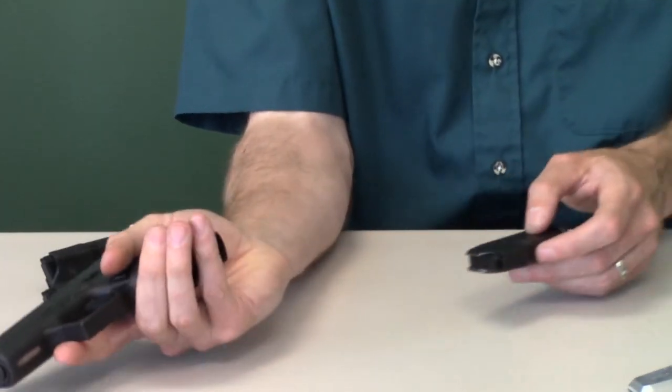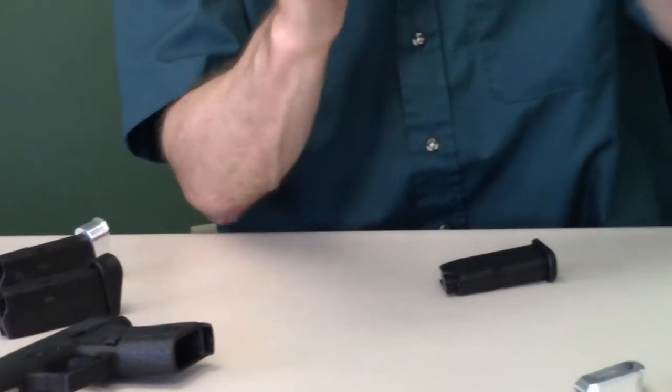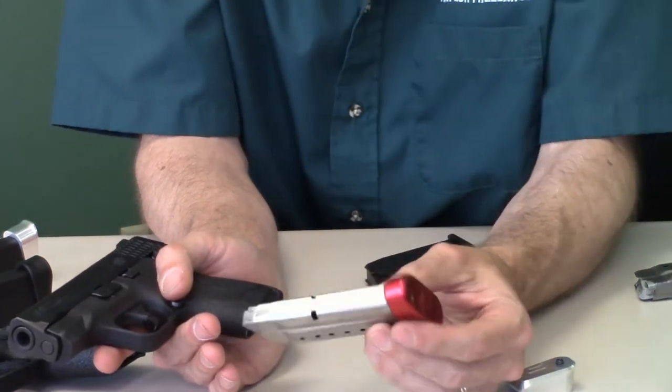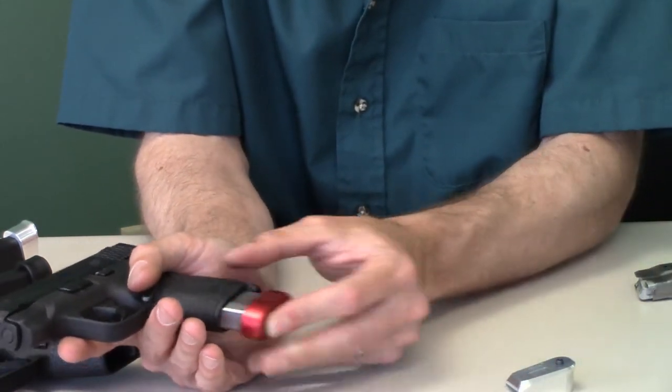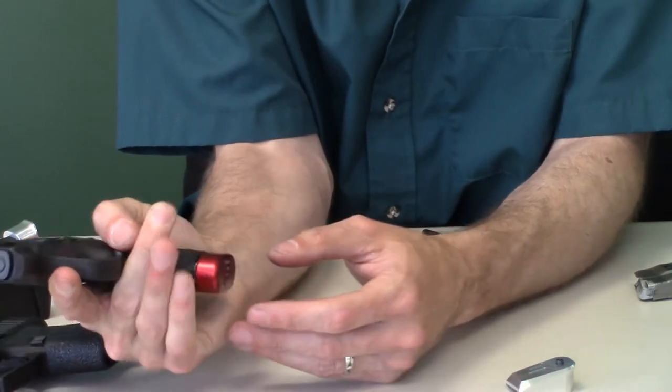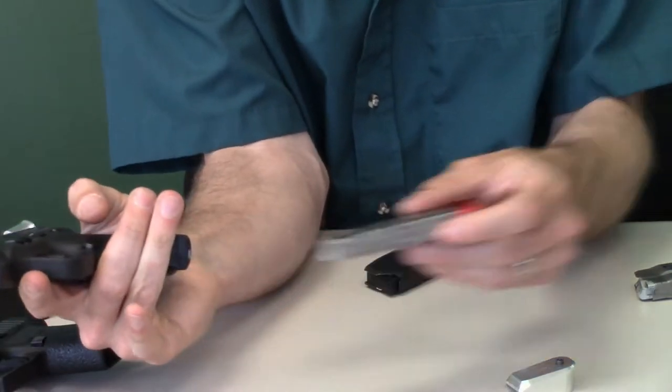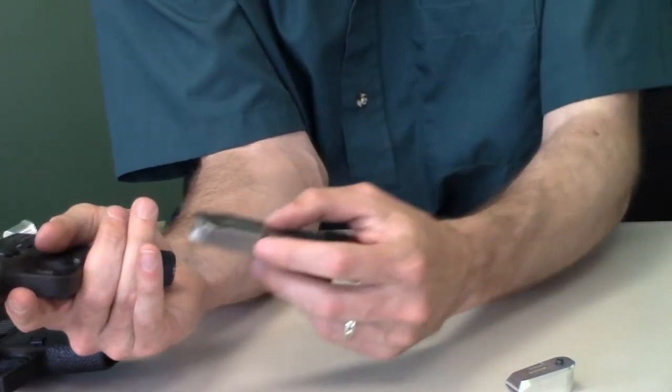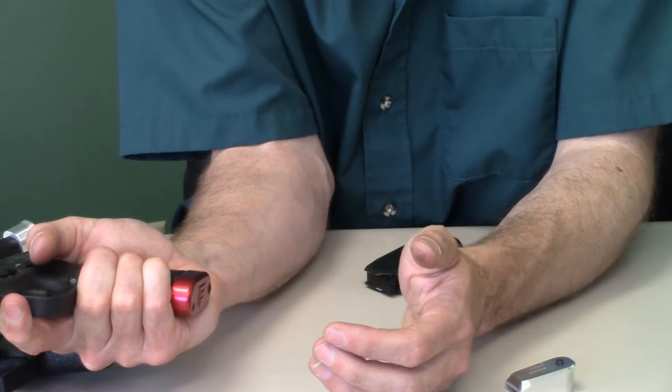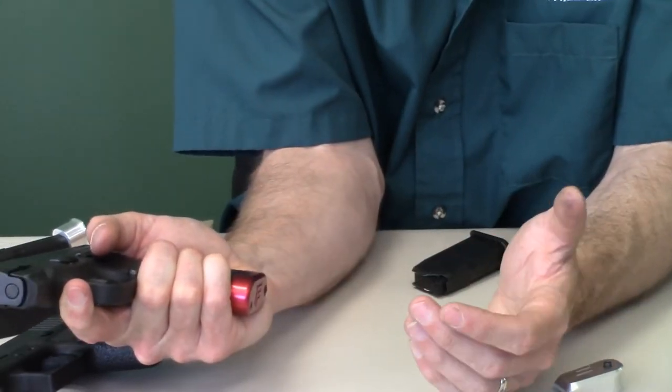The Smith & Wesson Shield does the same sort of thing. When you put the factory base pad in the Shield, it's quite short. So what I end up doing is taking one of our plus one extensions and I run this kind of setup because I can get my hand on it. If people have heavier hands, they'll put our plus one extension onto an eight round magazine and it gives them a lot of room to work with. That works out slick.